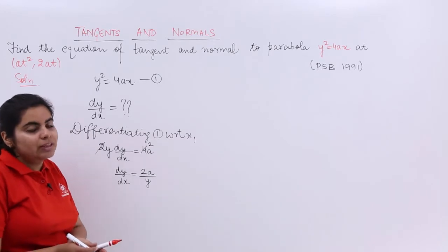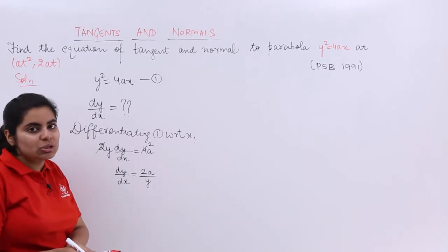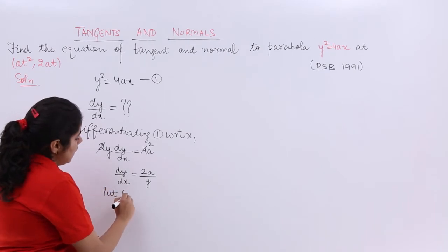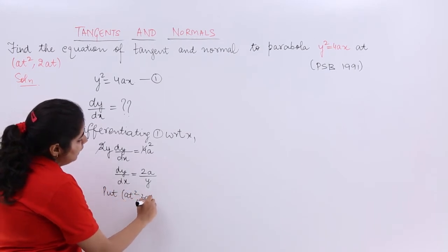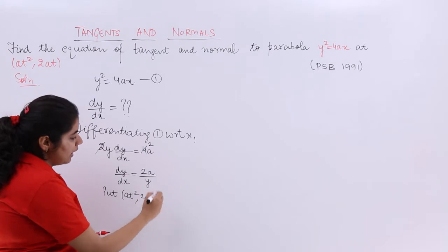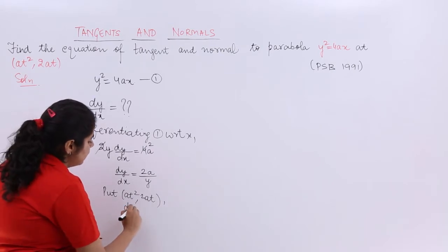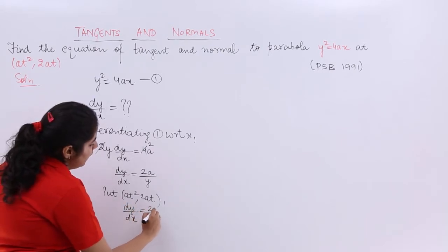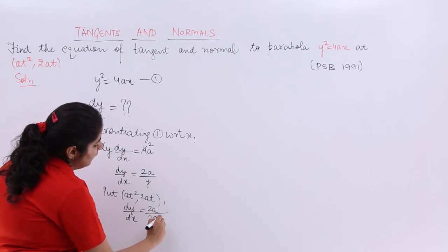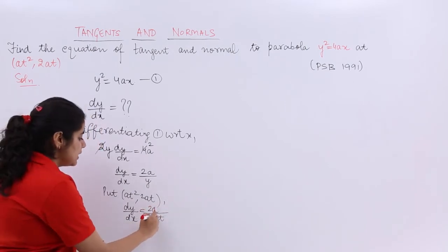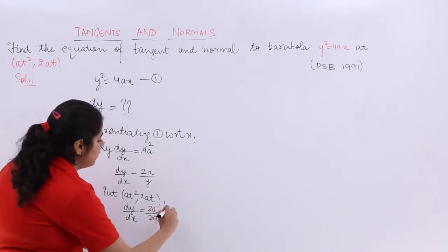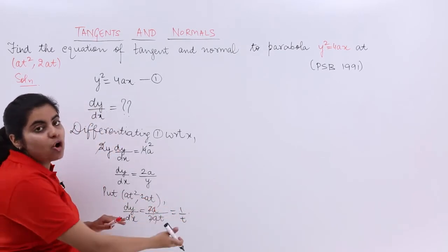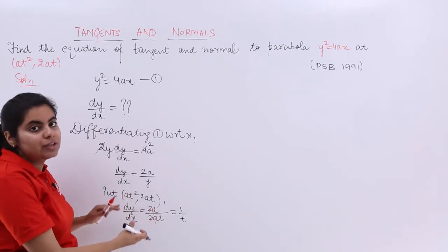Now, the point given to us is (at², 2at). Substituting into dy/dx = 2a/y, we get dy/dx = 2a/(2at) = 1/t. That is the slope of the tangent.